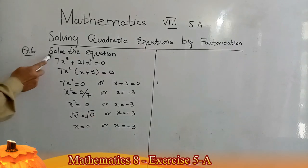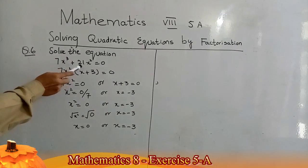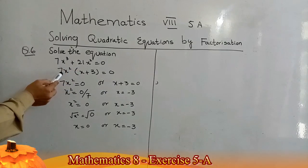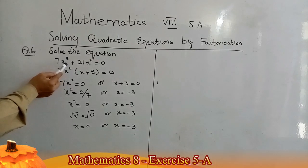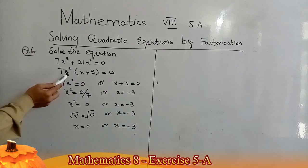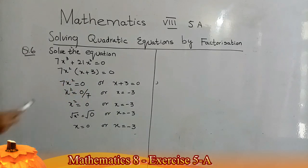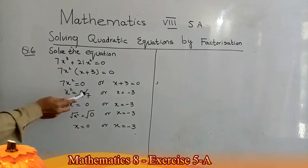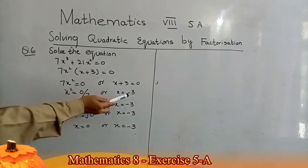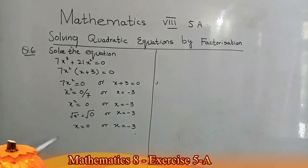Question number 6: solve 7x³ + 21x² = 0. We have two terms, so I take 7x² as a common factor: 7x²(x + 3) = 0. Either 7x² = 0 or x + 3 = 0. From 7x² = 0, x² = 0, taking the square root gives x = 0. From x + 3 = 0, x = −3. So x = 0 or x = −3 is the solution.